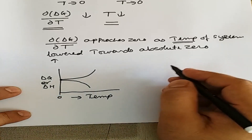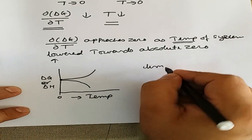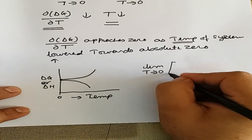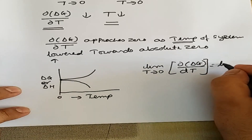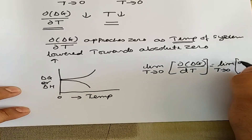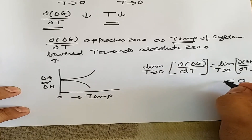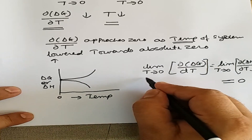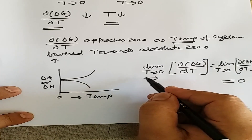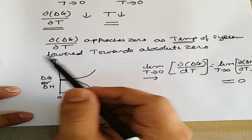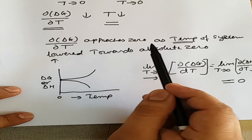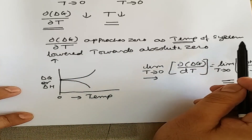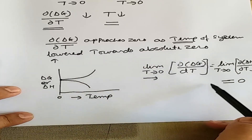The mathematical form of the Nernst Heat Theorem can be written as: the limit as T tends to zero of dΔG/dT is equal to the limit as T tends to zero of dΔH/dT, and both of these will be equal to zero at absolute zero. To repeat the statement: the value of dΔG/dT approaches zero gradually as the temperature of the system is lowered towards absolute zero.